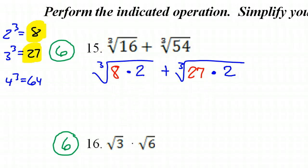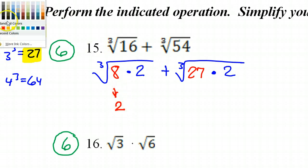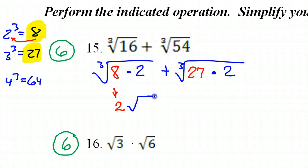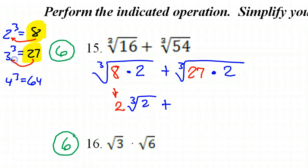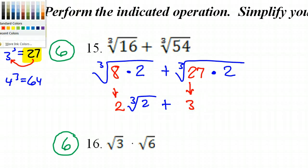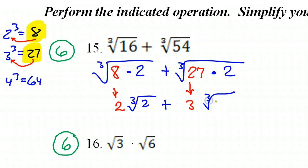Now, both of these perfect cubes will simplify. So the cube root of 8 is 2. So this is going to become a 2 on the outside of the radical. And that's going to leave behind the blue part here, which is the cube root of 2. Now over here, we've got the cube root of 27. Well, the cube root of 27 is 3. So I'm going to have a 3 on the outside of the radical. And then I will have cube root of 2.